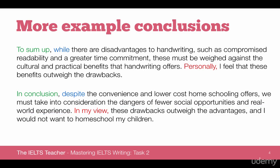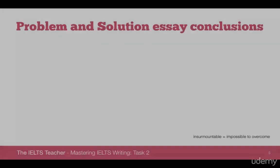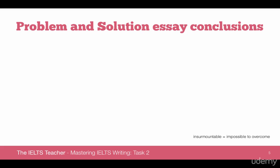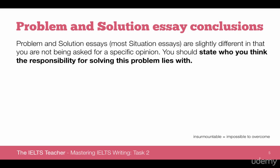Something very important to note: we are not just saying there are pros and cons. We are not just saying in conclusion there are some advantages and disadvantages — that would only rephrase your introduction. Instead, we are actually summarizing our ideas, arguments, and content. In the first conclusion you can see phrases like compromised readability, greater time commitment, cultural and practical benefits. In the second: convenience and lower cost, dangers of fewer social opportunities, and real world experience. That is a clear summary of the ideas put forward in the body. Let's move on to look at a problem and solution conclusion, which is a little different. Problem and solution essays are slightly different in that you are not being asked for a specific opinion.